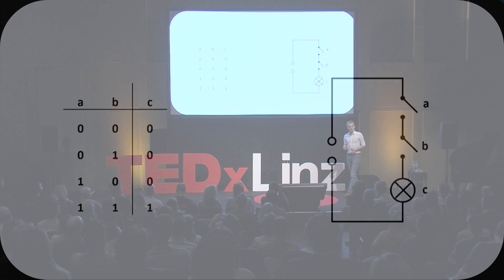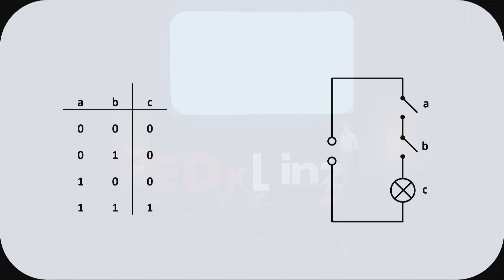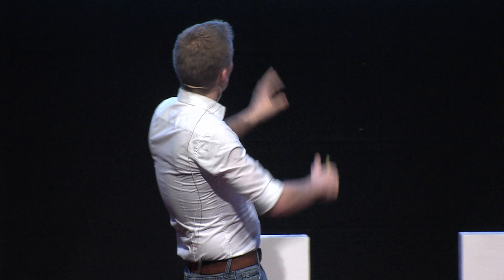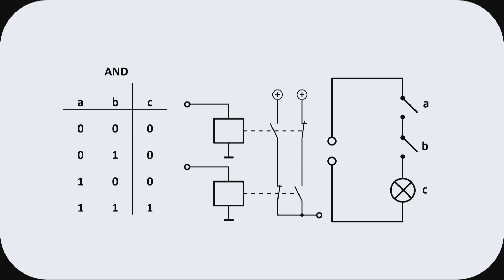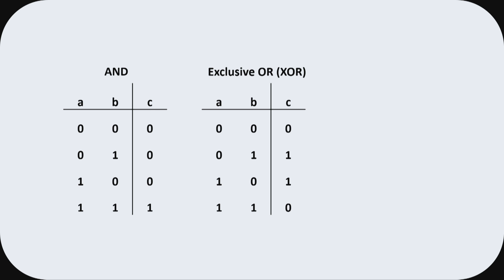This already is a computer — a very trivial electronic circuit computing what we call an AND function. The light only turns on if both switches are closed. And we can also build another circuit which computes something different: a function where the light is on when exactly one of the switches is turned on, and off in all other cases. We call this an exclusive OR function. Those electronic circuits everybody can build at home. Those form computers.